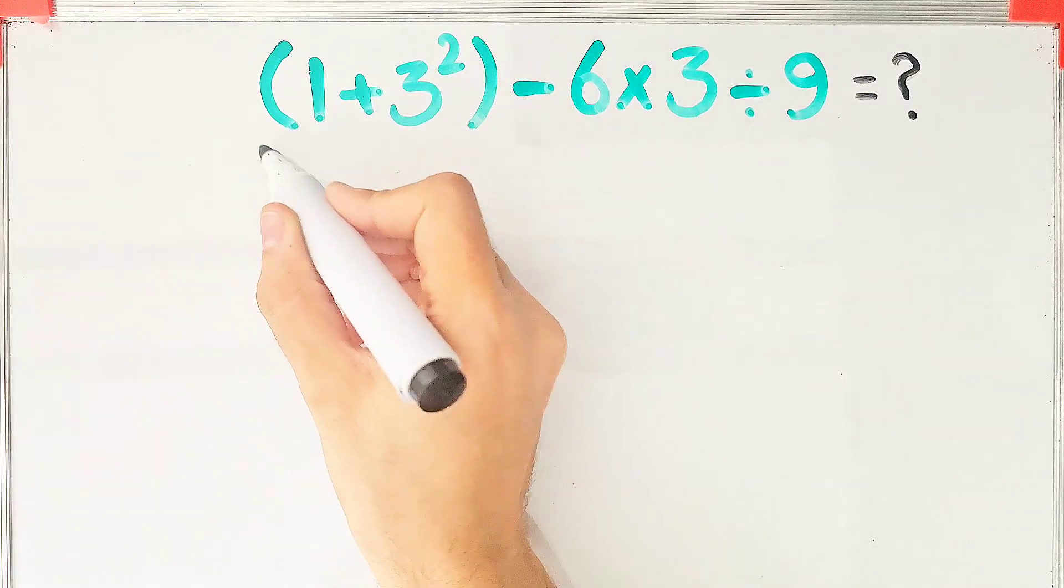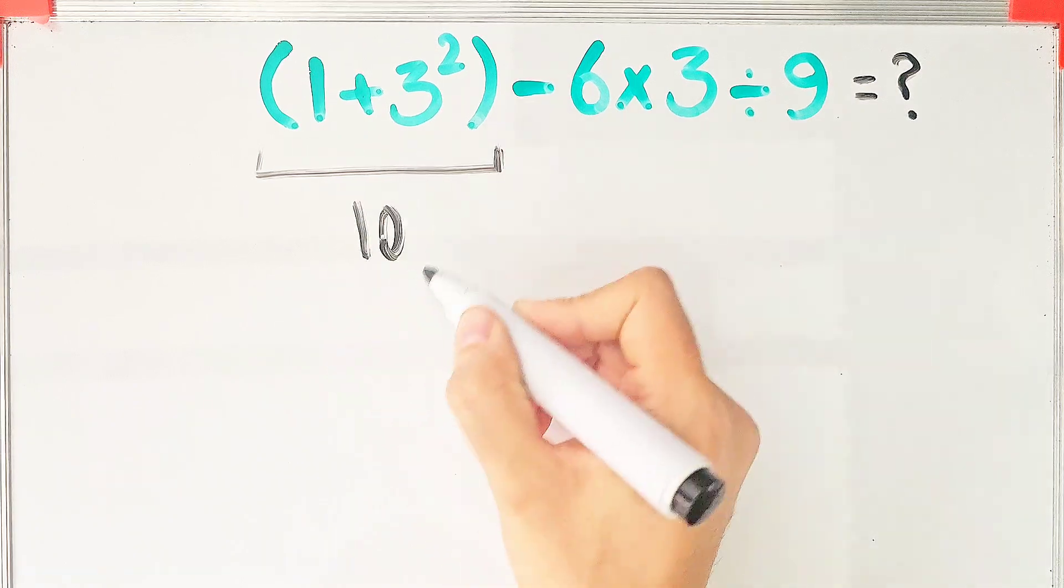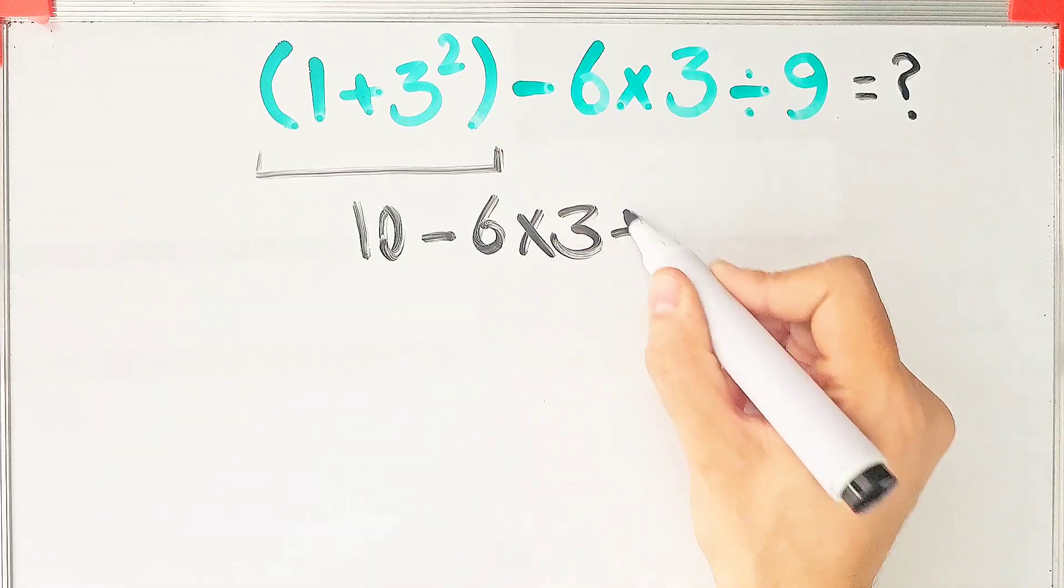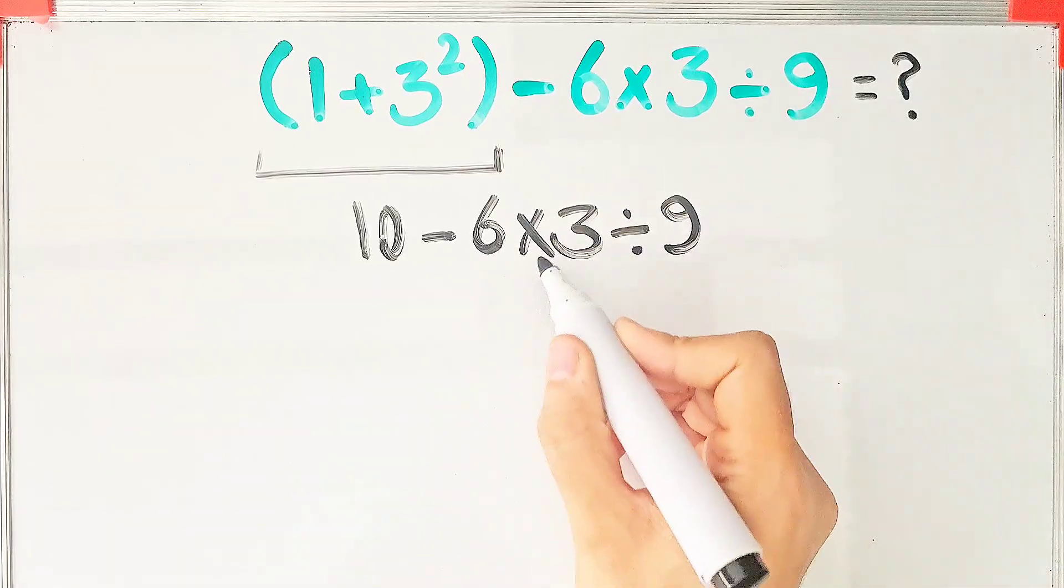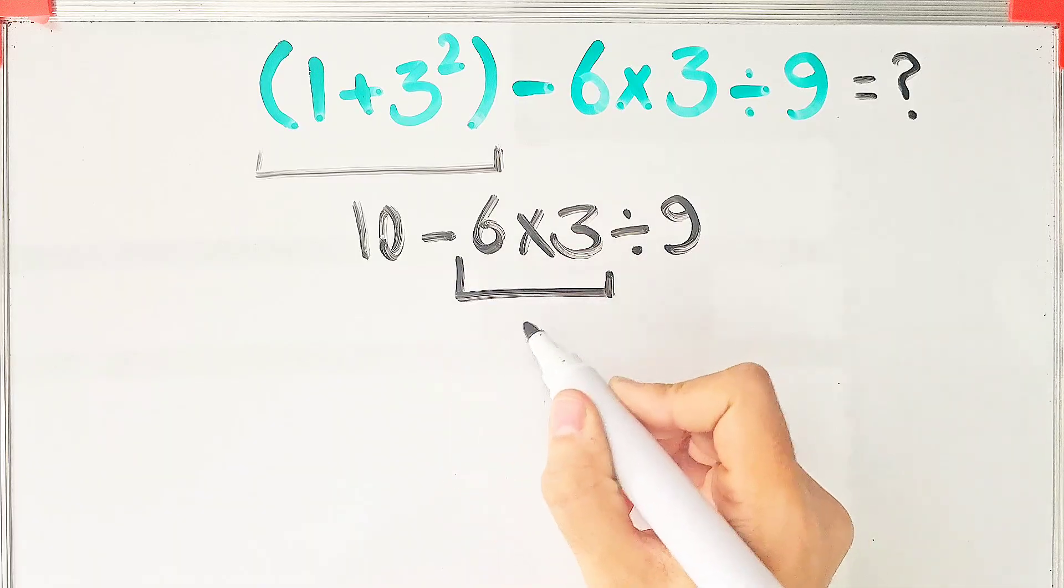We have 1 plus 3 to the power of 2 that equals 10. The question is 10 minus 6 times 3, then divided by 9. In this step, we do this multiplication. Negative 6 times 3 equals negative 18.